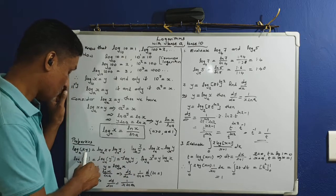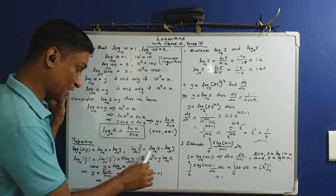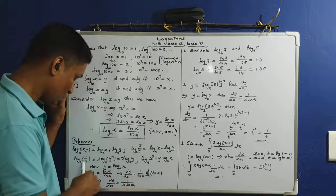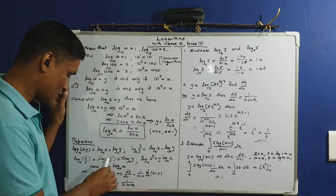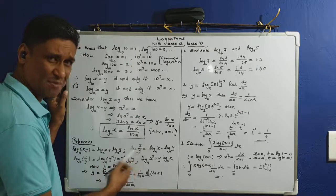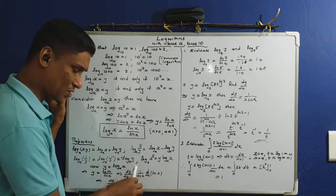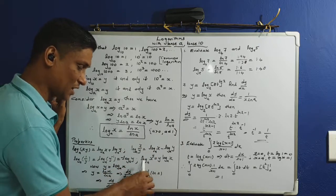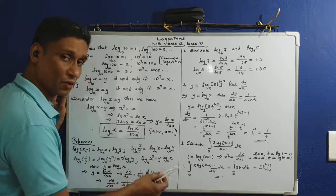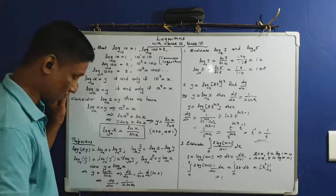The properties of logarithms: log(xy) to base a equals log x plus log y; log(x/y) equals log x minus log y; log(1/y) equals log(y raised to minus 1), which is minus log y; and log(x to the power y) equals y·log x — the power rule.